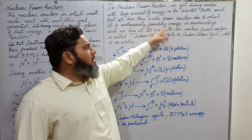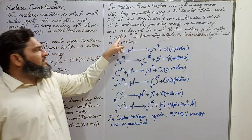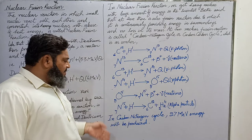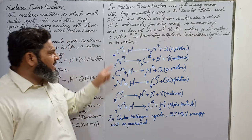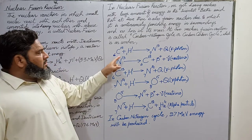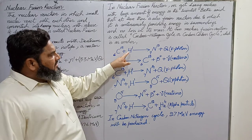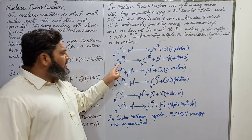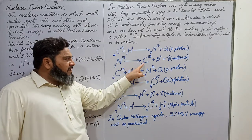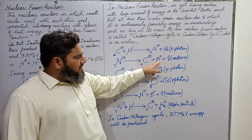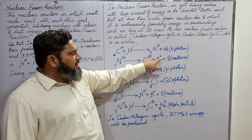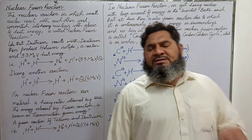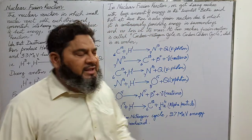At the sun, the nuclear fusion reaction is called the carbon-nitrogen cycle, which has 6 steps. In step one, carbon reacts with hydrogen producing a nitrogen isotope with release of heat energy in the form of a gamma photon. In step two, this nitrogen isotope converts into an isotope of carbon with release of beta positive particles — that is, a positron — and a neutrino. Neutrino has a very small mass of 10⁻⁴⁰ kg.